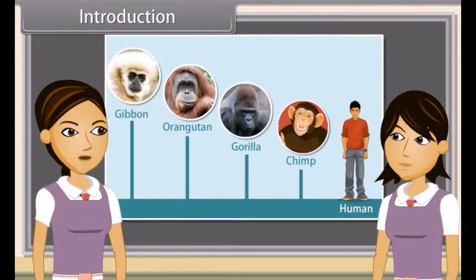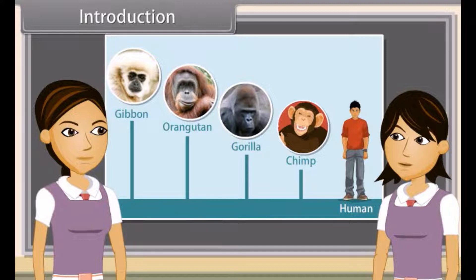Hey Sunita, look at this chart. What can you observe from this chart? It depicts that human, chimpanzee, gorilla and other two animals possess some similarities and differences.